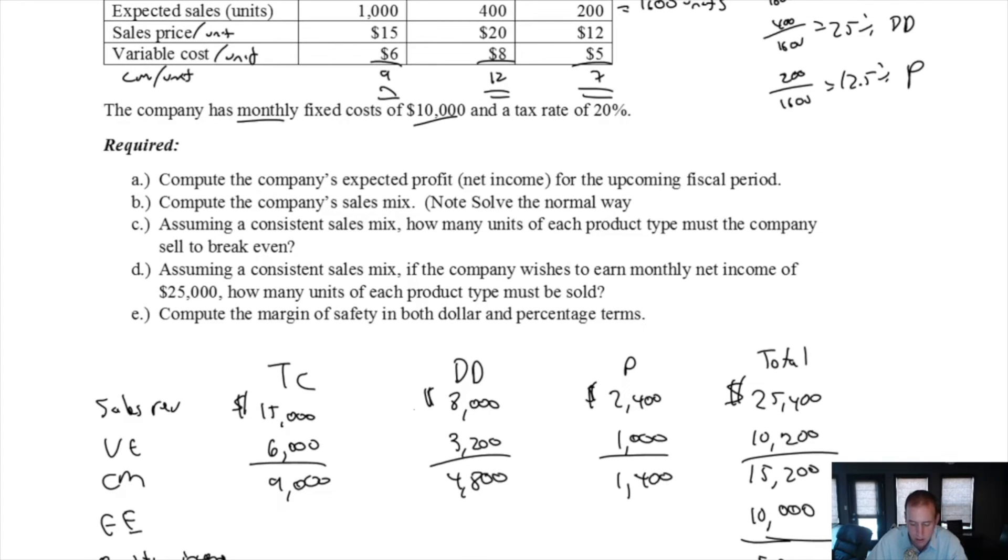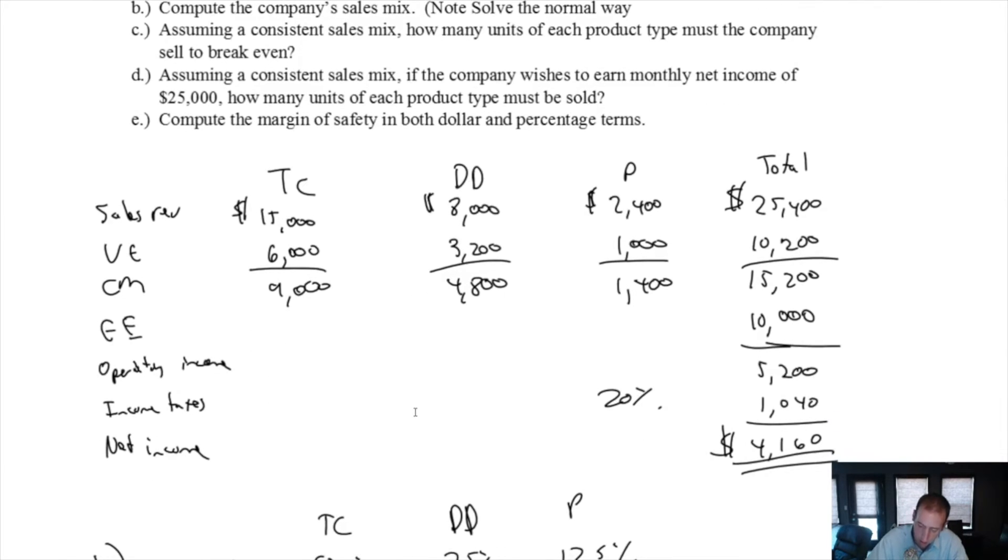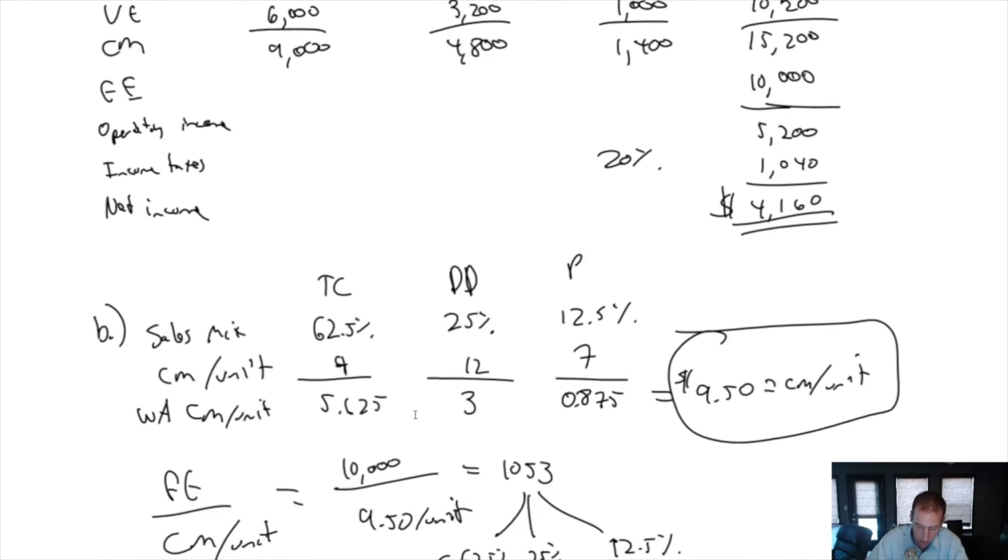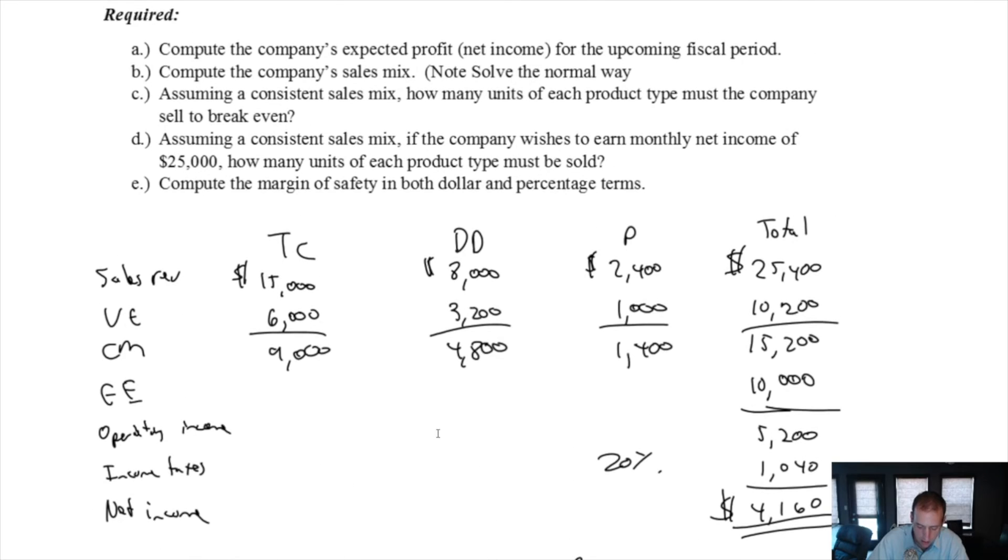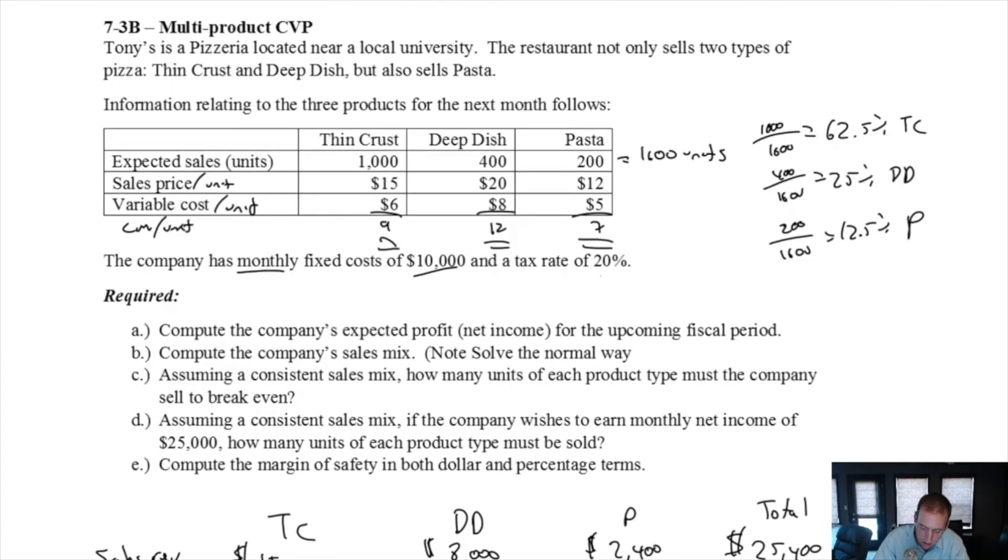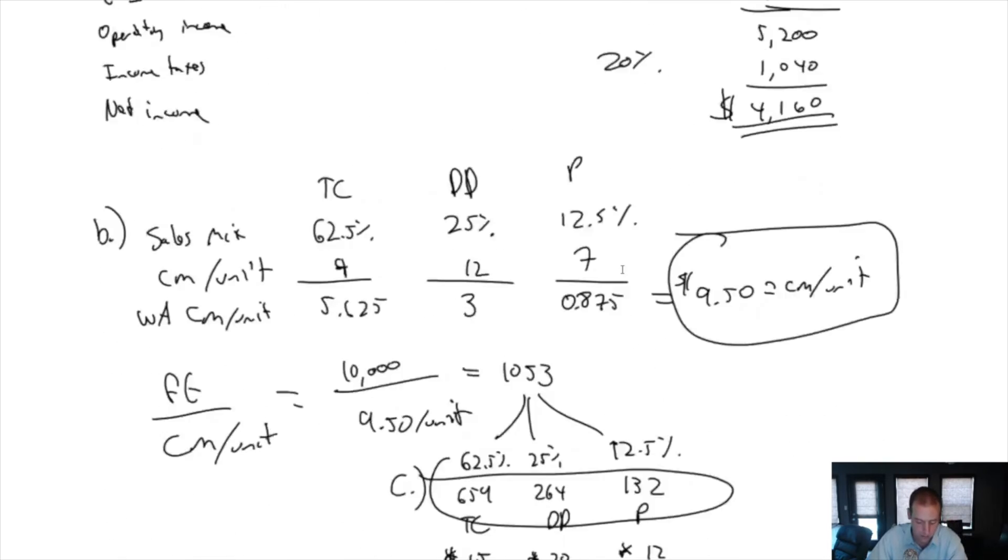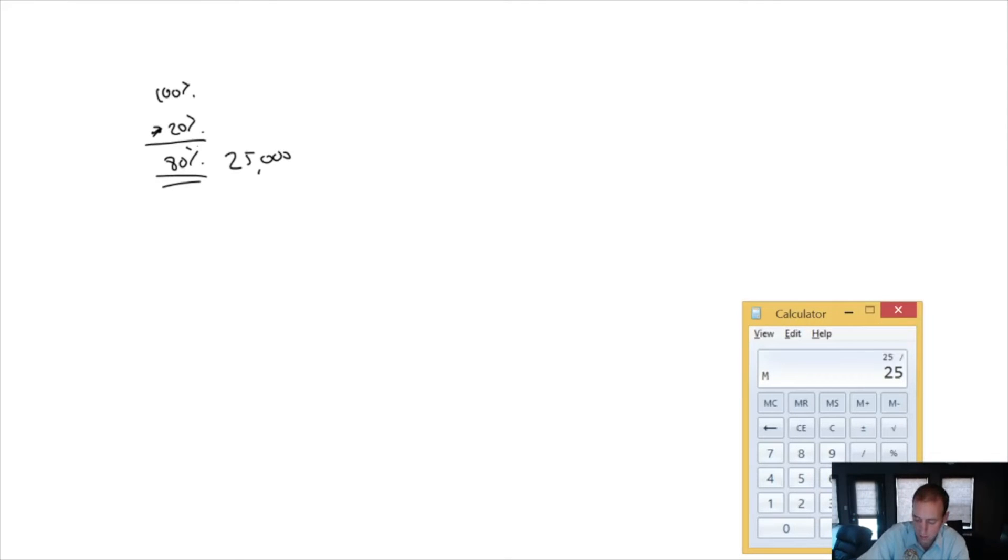Moving on to part D, assuming a consistent sales mix, if the company wishes to earn monthly net income of $25,000, how many units must they sell? Well, obviously more than what they're selling currently, a lot more because they're only making $4,160. So if they want to make $25,000 and taxes are 20%, how much do they want to make before tax? If pre-tax net income is 100%, taxes are going to be 20% of that, and net income is going to be 80%. We just divide net income by 80%.